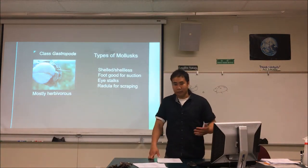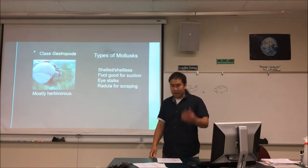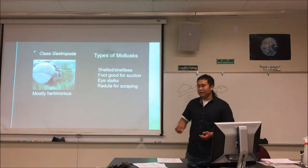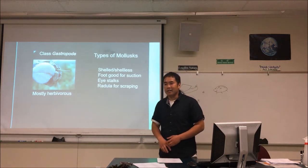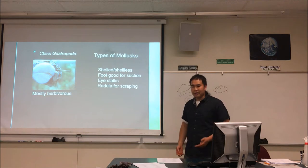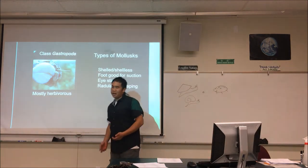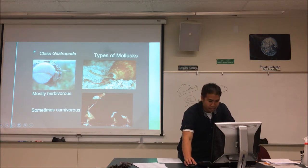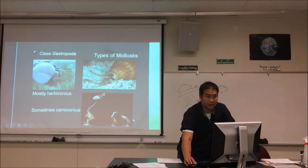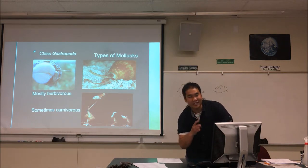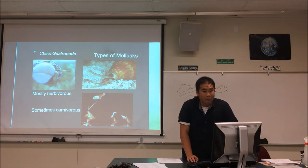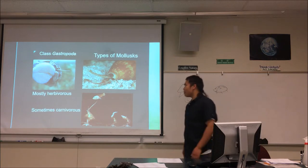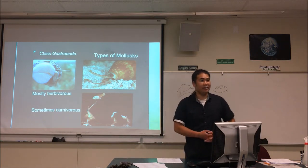Some snails use their radula for purposes other than scraping algae — for example, the oyster drill uses its radula to scrape through an oyster shell until it gets inside. There's also the cone snail, which has a modified radula. A student mentioned seeing a pink and white sea slug in a documentary that shot toxins into a nearby fish — the instructor confirms that the cone snail does exactly that with its modified radula, shooting a harpoon loaded with venom.